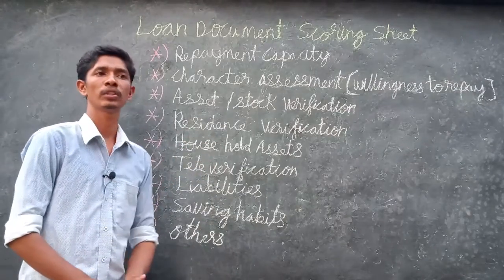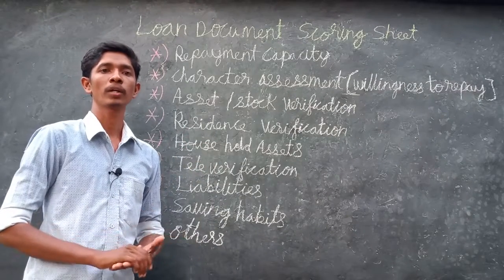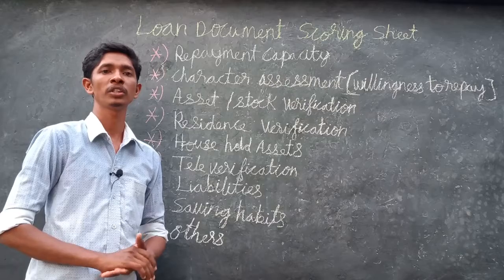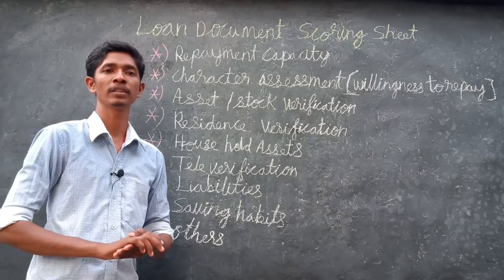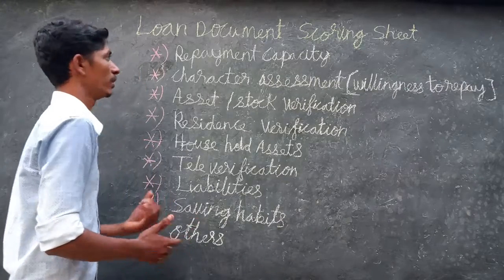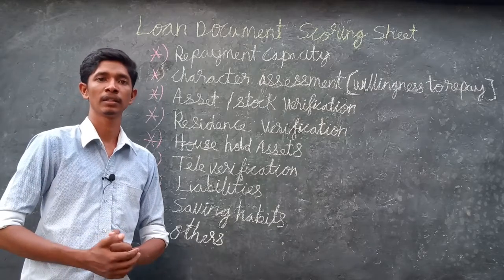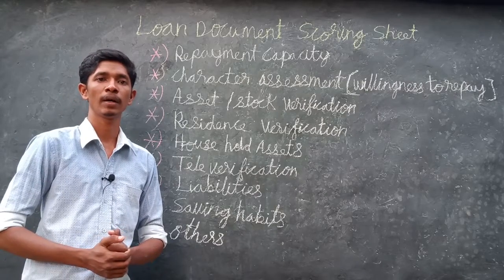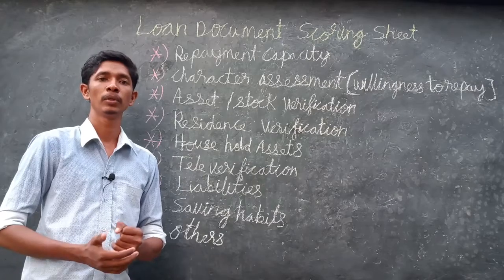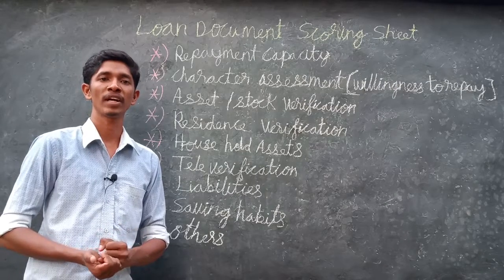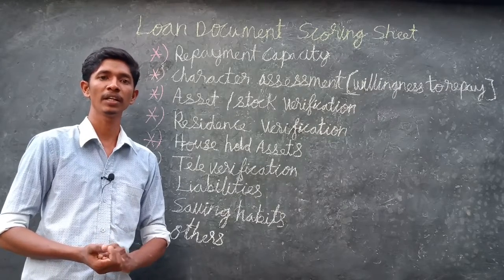Welcome everybody. Today we will see about the loan document scoring sheet. The scoring sheet is prepared by the bank manager. The first component is repayment capacity, which is identified by the branch manager using the CIBIL score and Equifax — 35 mark credit rating.